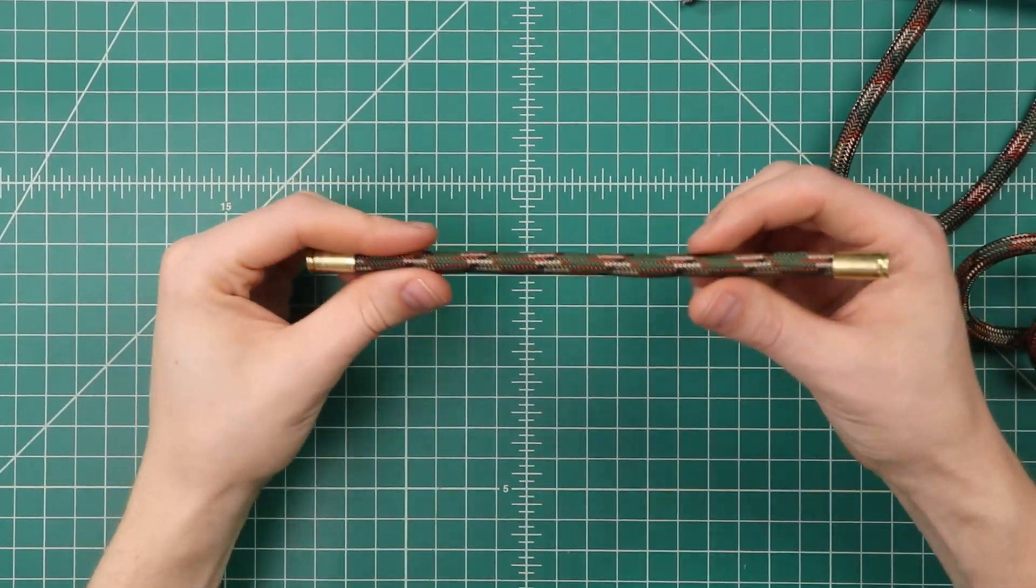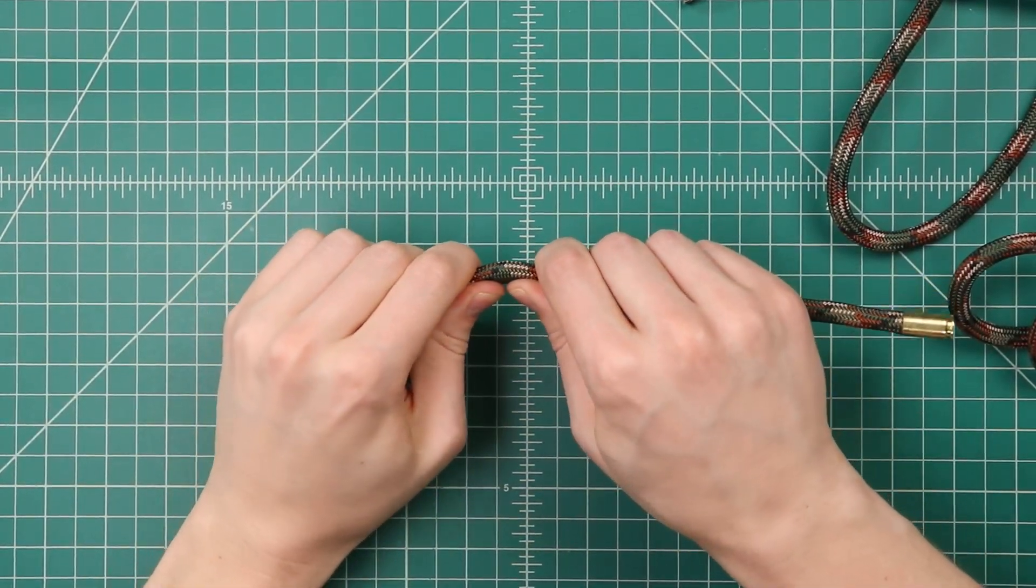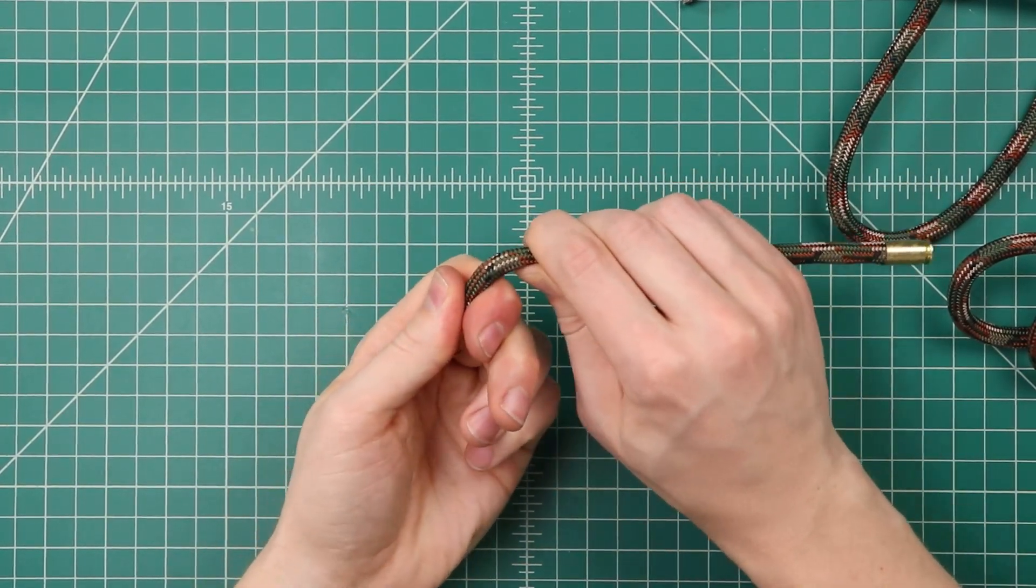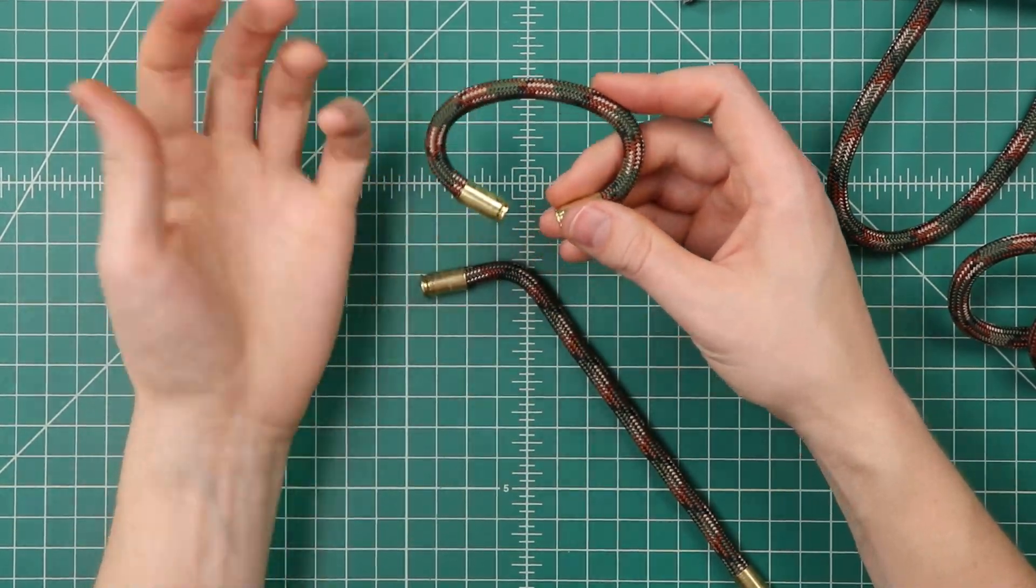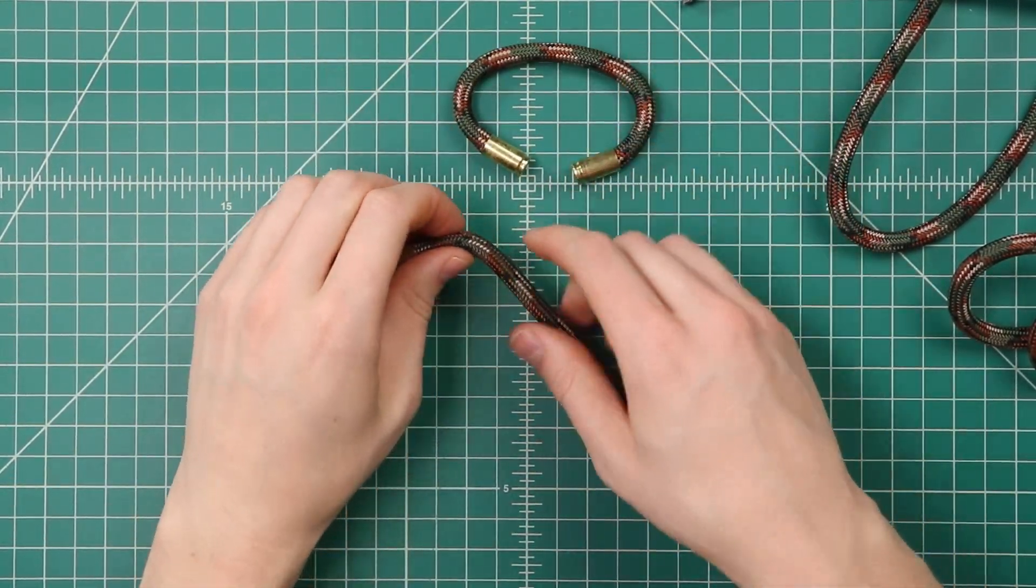All right, now that that's dry, I think we can go ahead and bend that into shape. Start on one end here. You want a little bit steeper of a bend on the ends than you do across the middle, because your wrist isn't a full circle—it's more of an oval.